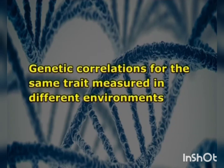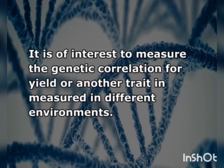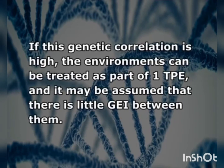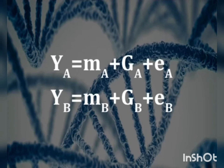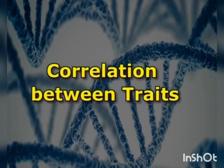It is of interest to measure the genetic correlation for yield or another trait measured in different environments. If this genetic correlation is high, the environments can be treated as part of one target population of environments (TPE), as it may be assumed that there is little G×E interaction between them. Assuming the true traits of environments A and B, the model for each site is: Y_A = M_A + G_A + E_A and Y_B = M_B + G_B + E_B.